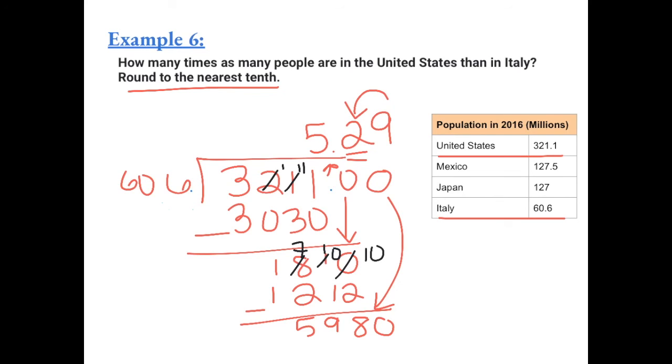The 2 is in the tenth place, so we have to look at the number after it. If the number after the 2 is 5 or bigger, then we round the 2 up. So that means there's about 5.3 times more people in the U.S. than there is in Italy.